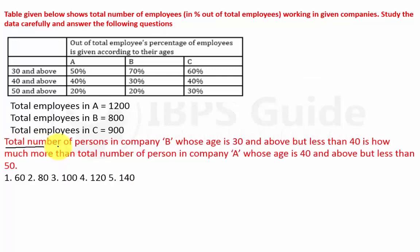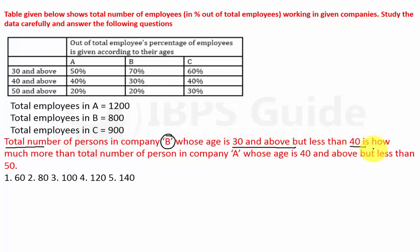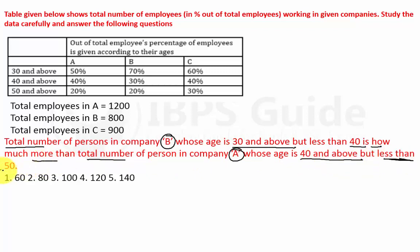Question 2: The total number of persons in Company B whose age is 30 and above but less than 40 — how much more is this than the number of persons in Company A whose age is 40 and above but less than 50?